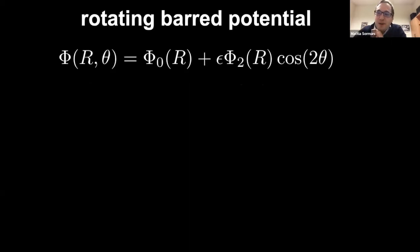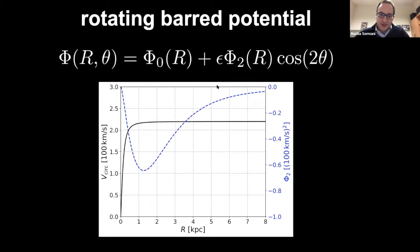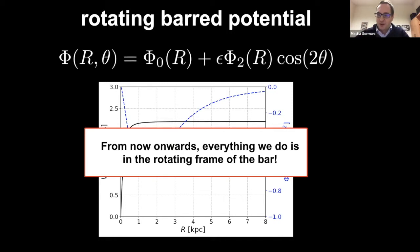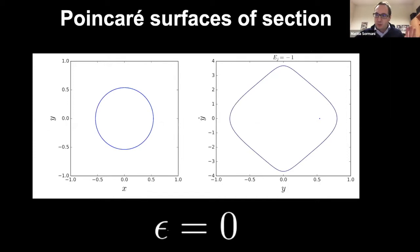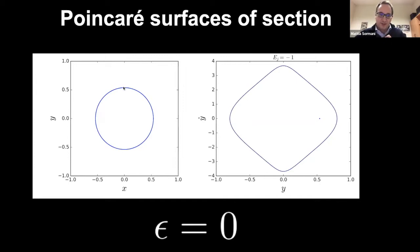Let's take the simplest possible bar potential, which is the sum of an axisymmetric part phi-zero plus epsilon times a quadrupole — the simplest possible model of a bar. From now onwards everything is done in the rotating frame of the bar. Starting with the bar turned off and completely axisymmetric, we play the game called surfaces of section. On the left I show the orbit from the top-down view; on the right, every time I cross the y-axis from left to right, I write down the y coordinate and the y-dot velocity of the crossing. For a circular orbit I always hit the same point — it's one point.